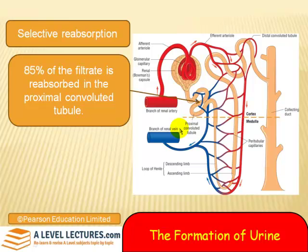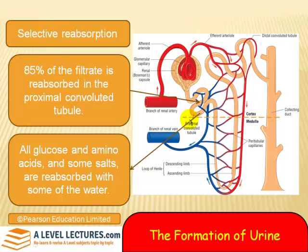Let's look at where reabsorption happens. 85% of the filtrate is reabsorbed in the proximal convoluted tubule, or PCT. All glucose, amino acids, and some salts are reabsorbed in this area along with some of the water. So we're getting the useful substances back here.